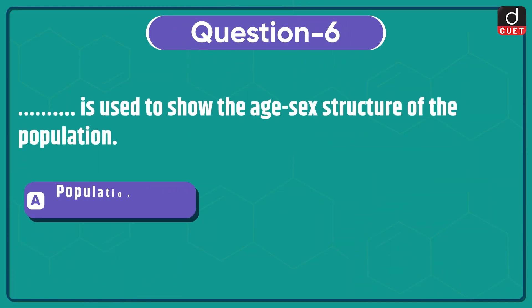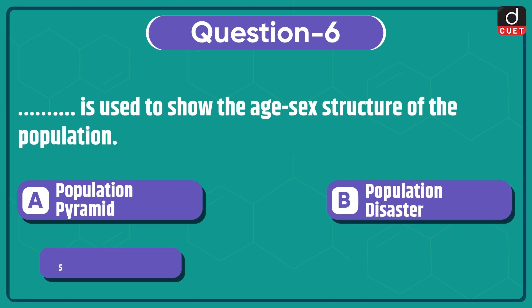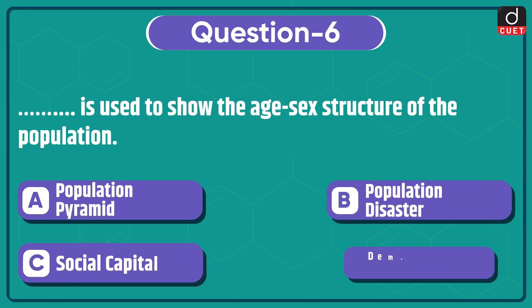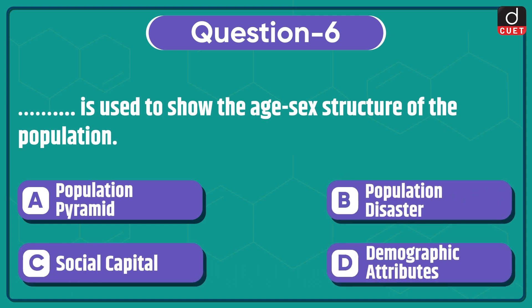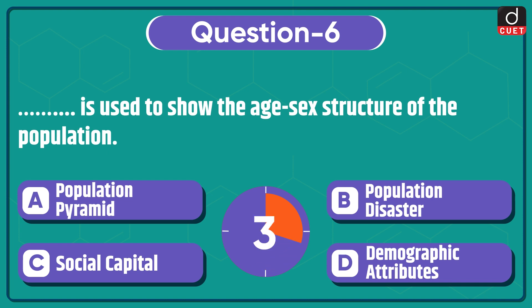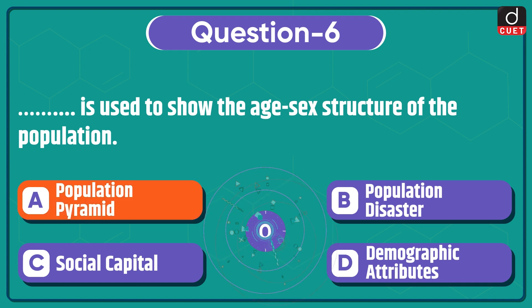Next question: dash is used to show the age-sex structure of the population — population pyramid, population disaster, social capital, or demographic attributes? The correct answer is option A, population pyramid.